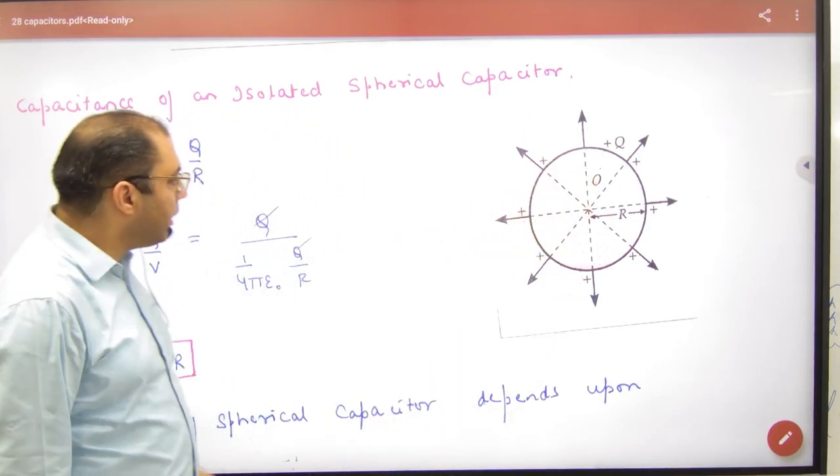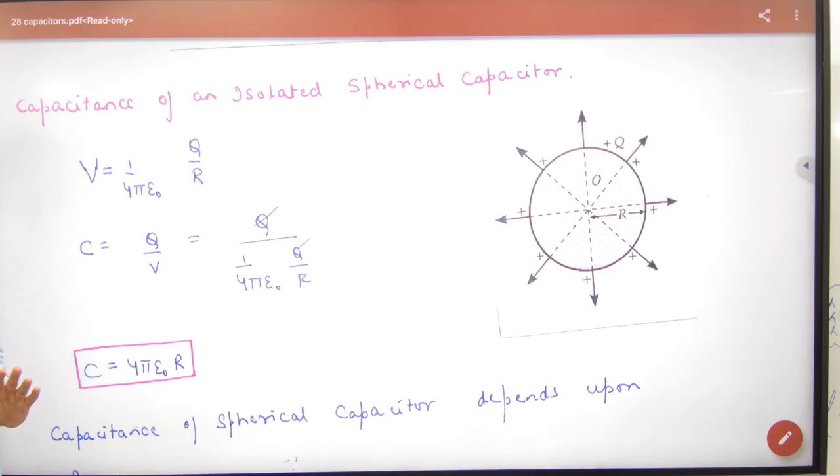So what will be the potential on its surface? 1 by 4π epsilon not q by r. So what will be its capacity? Charge upon potential. Cancel the charge, and the answer is the value of capacity.